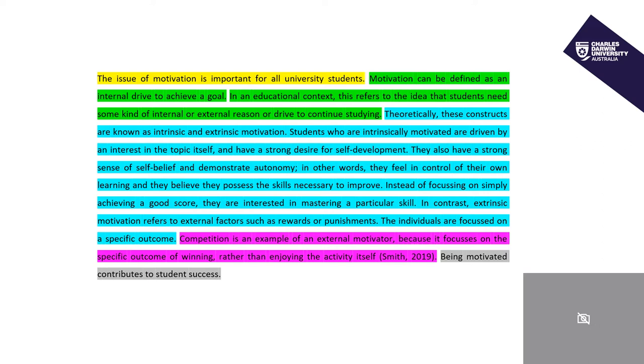However, this yellow sentence does two jobs. At the beginning of the sentence it introduces the subtopic of motivation, but at the end of the sentence it links the subtopic back to the overall assignment. Remember, the overall assignment is: what are the factors that contribute to student success? So by writing 'all university students,' this student has reminded the lecturer about the general topic as well as the specific subtopic for this paragraph.